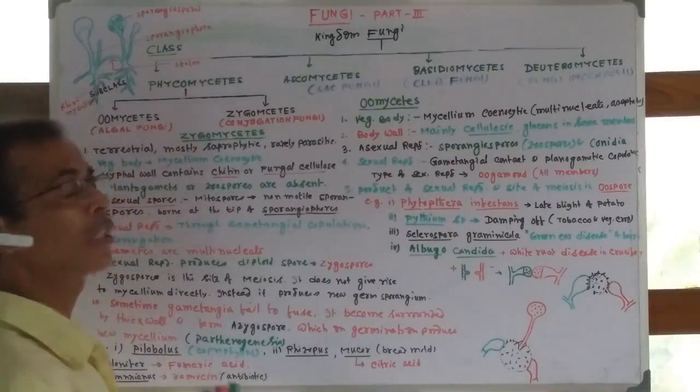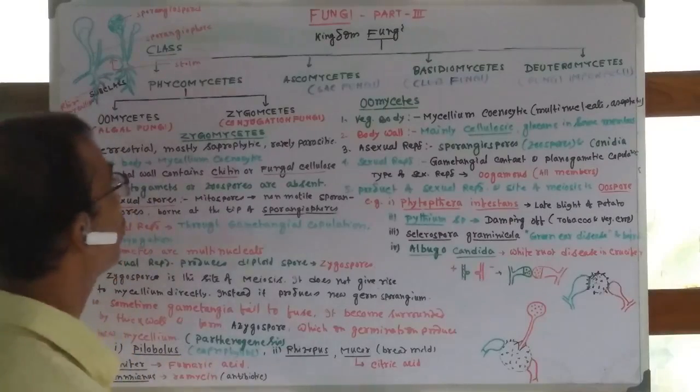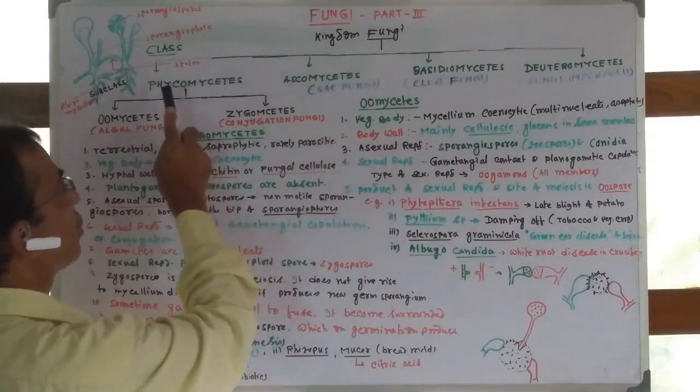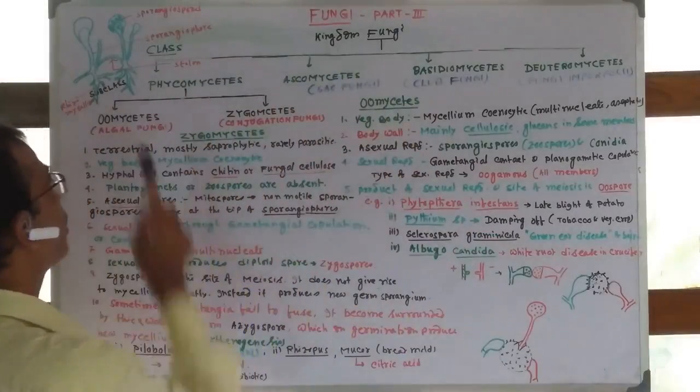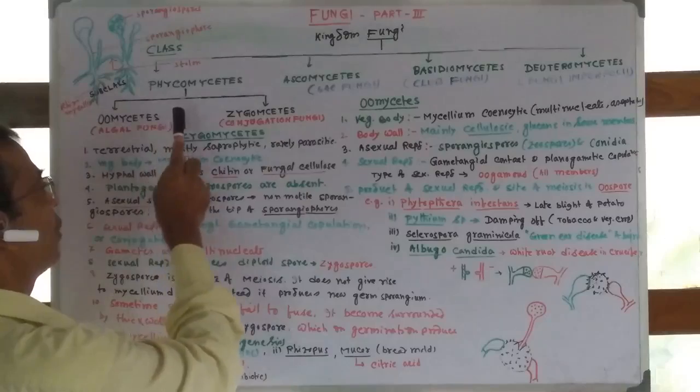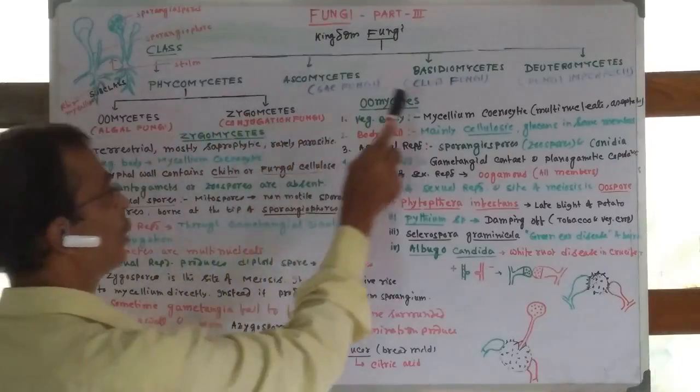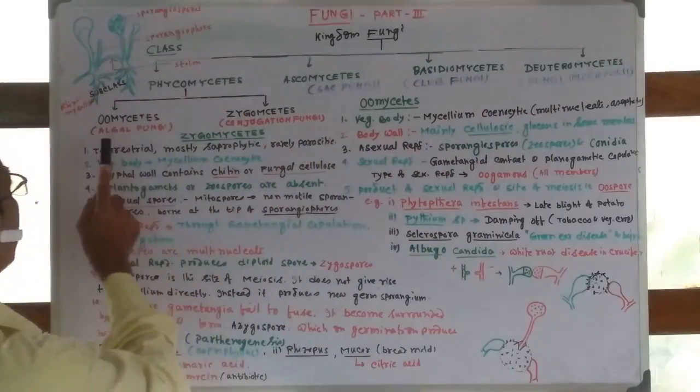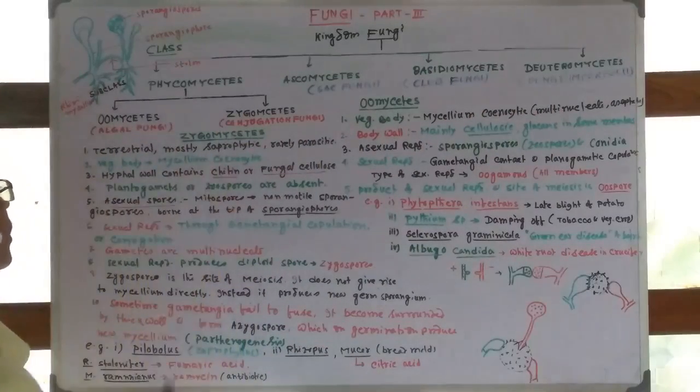Kingdom Fungi is divided into four classes: Phycomycetes, Ascomycetes, Basidiomycetes, and Deuteromycetes.